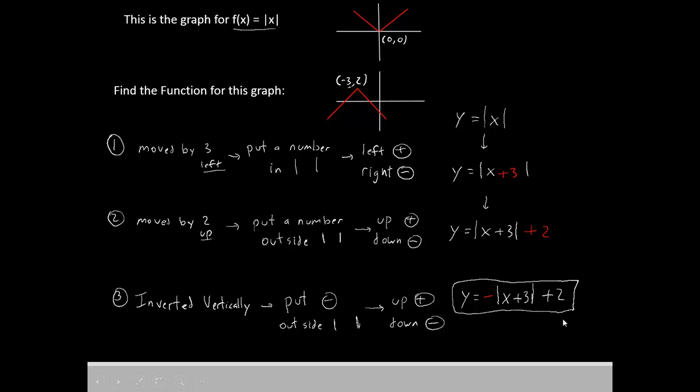Y equals negative absolute value x plus 3 plus 2. And that's how you do a transformation on an absolute value function. Next episode, we'll do more transformations with square root functions. We'll see you there.